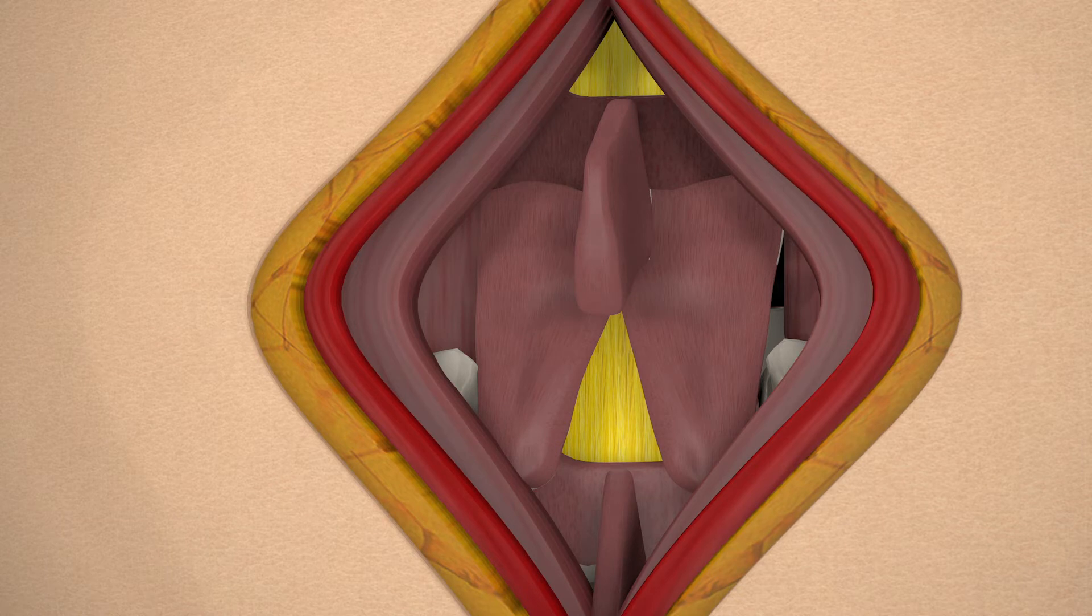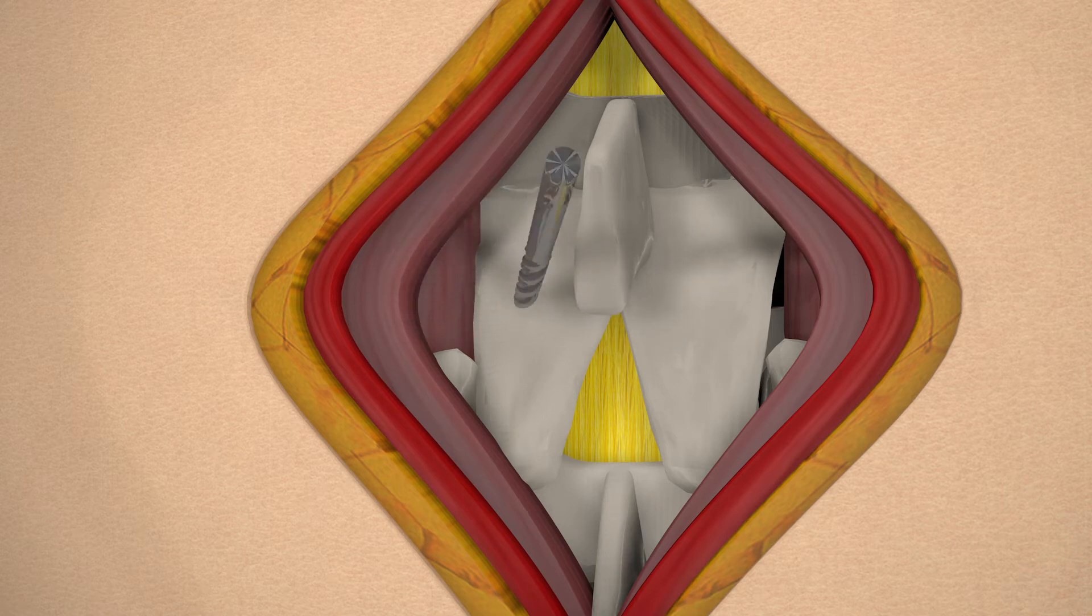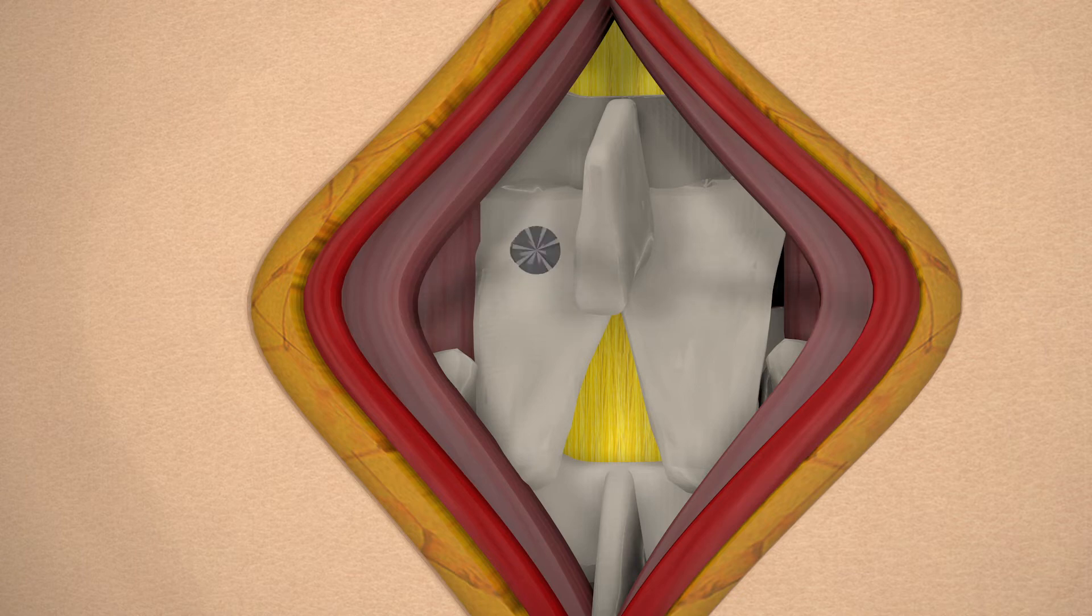After the excess tissue has been removed around the body of the vertebrae, a high-speed burr will be used to cut a window into the lamina. This is called the laminectomy and allows the surgeon to gain access to the spinal canal.